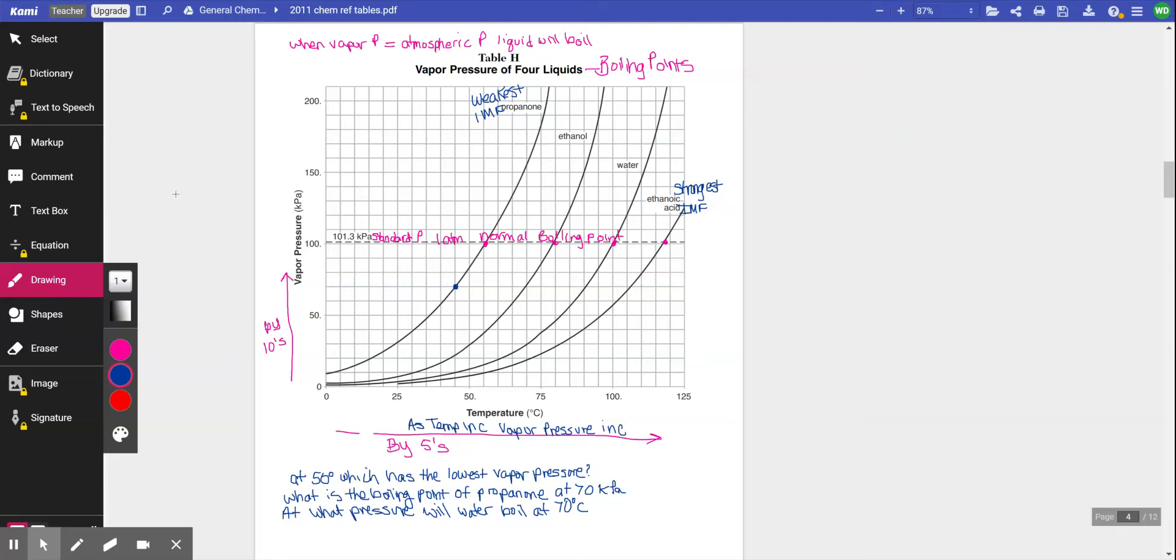Okay, so this is Reference Table H mini video for the chemistry reference tables, and this is the vapor pressure of four liquids. So if you see these four liquids, propanone, ethanol, water, and ethanoic acid in a multiple-choice question,